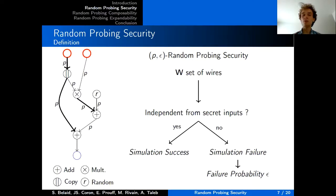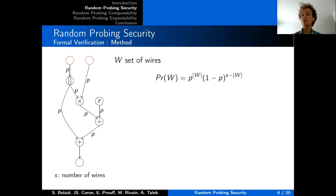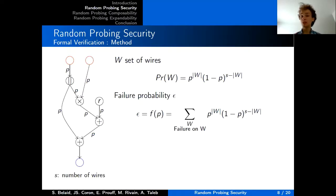To determine the random probing security of a circuit, we need to compute the value of this failure event probability. Since each wire leaks independently with probability p, the probability of acquiring a set W follows a binomial distribution with respect to p and the total number of wires s. We can express epsilon as the sum over all sets W for which there is a simulation failure of their corresponding probability of acquisition.